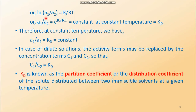Proceeding further, taking RT to the denominator on the right-hand side gives ln(a1/a2) = constant/RT. Eliminating the logarithm, a1/a2 = e^(constant/RT), which is yet another constant at constant temperature, denoted as Kd. So at constant temperature, a1/a2 = Kd, a constant. In the case of a dilute solution, the activity terms can be replaced by concentration terms. If the respective concentrations are C1 and C2, then C1/C2 is also a constant, denoted as Kd, known as the partition coefficient or distribution coefficient.